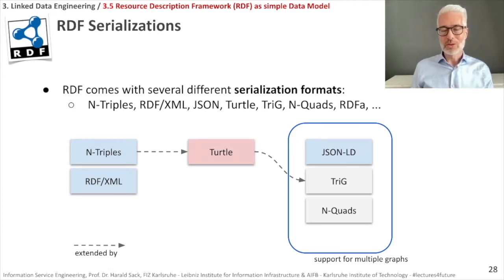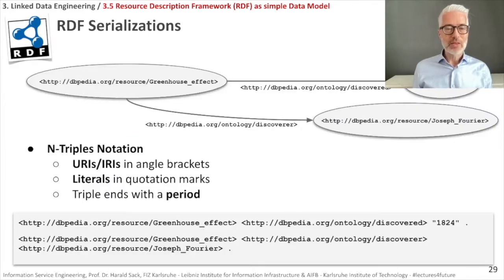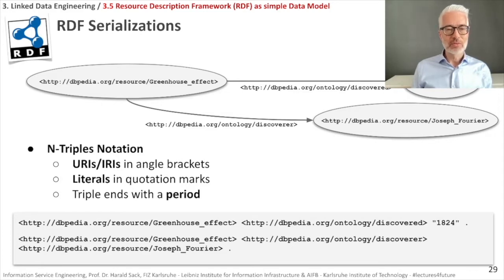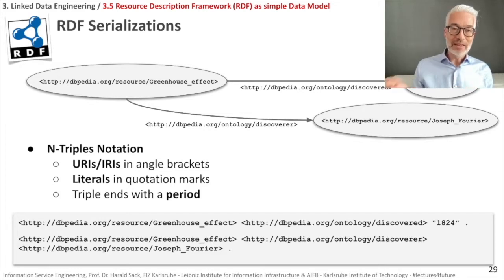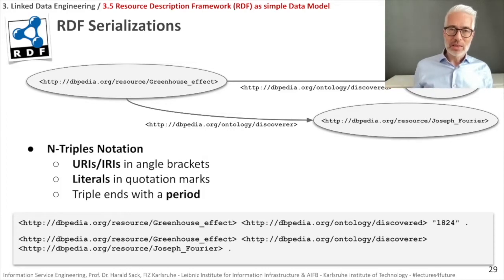Let's look back at N-Triples notation. In N-Triples, URIs or IRIs are noted in angle brackets as complete URIs. Literals are given in quotation marks, and to denote that a triple has ended — meaning you have subject, property, and object — you end everything with a full stop, a period.